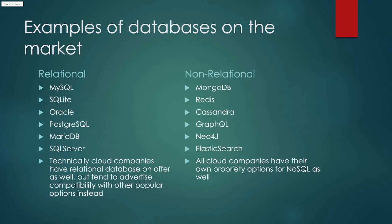Some examples of databases on the market. Relational databases include MySQL, Oracle, MariaDB, and SQL Server. Cloud companies will have relational databases as well, but they tend to advertise their compatibility instead — saying they're completely compatible with Oracle or MySQL. Non-relational options include MongoDB, Redis, Cassandra, Neo4j, and Elasticsearch. All cloud companies also have their own proprietary NoSQL options you can choose if you go with a particular cloud provider.